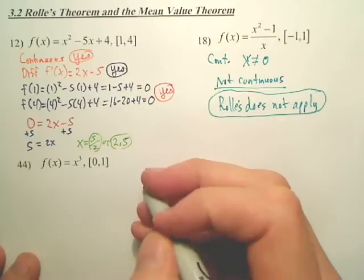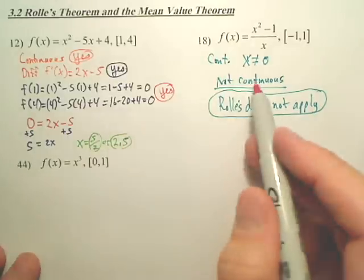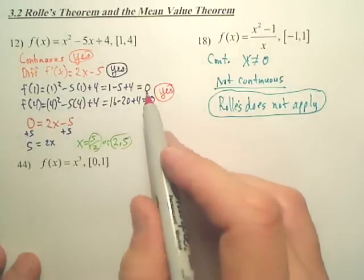Problem 44 is dealing with Mean Value Theorem. Mean Value has the same stipulations as Rolle's, except you don't care about checking these two endpoints.